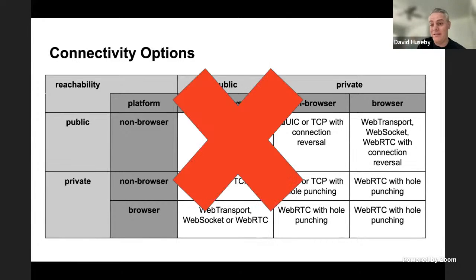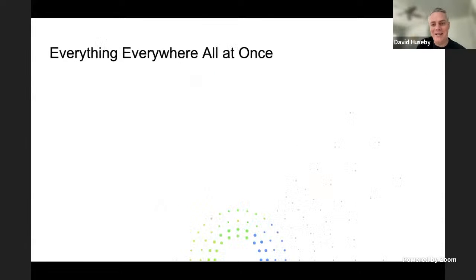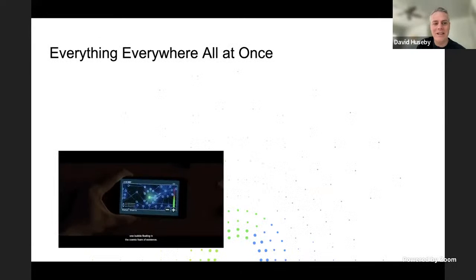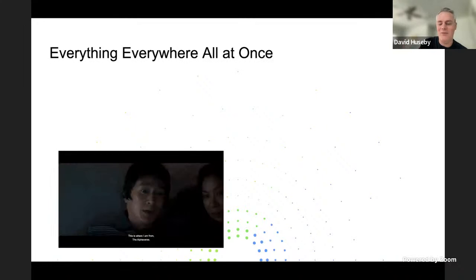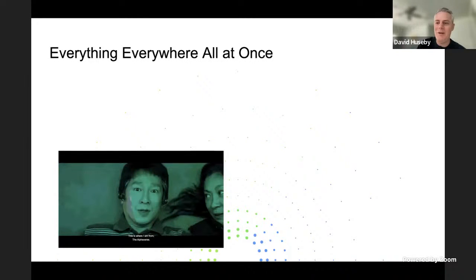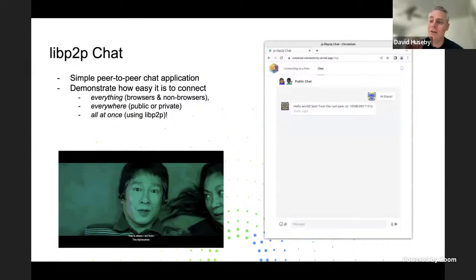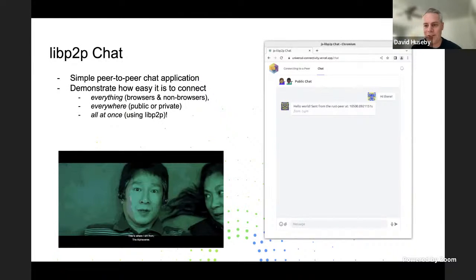I threw this slide in here because this is how LibP2P has always demonstrated what options we have for connecting and all that kind of stuff. This is a very boring slide, so we're not going to use that anymore. Instead, we're going to demo connecting everything everywhere all at once — I think some of you get the reference to this movie, very popular last year. LibP2P, we joke, allows you to connect everything everywhere all at once. So to demonstrate that, the team at Protocol Labs built this simple chat app, because we all need another chat app.